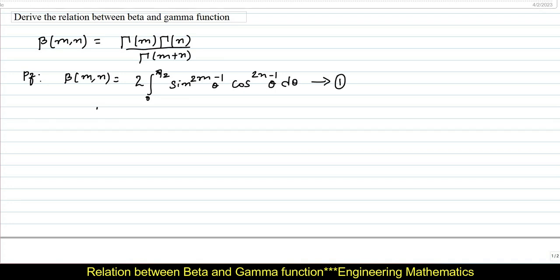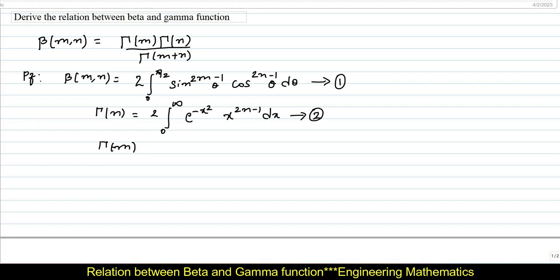Similarly, gamma of n is defined as 2 times of integral from 0 to infinity of e power minus x square into x power 2n minus 1 dx — I will name this as equation 2. Gamma of m is equal to 2 times of integral from 0 to infinity of e power minus y square into y power 2m minus 1 dy — I will name this as equation 3.